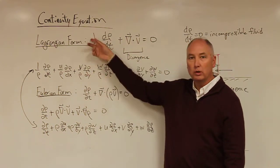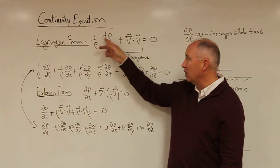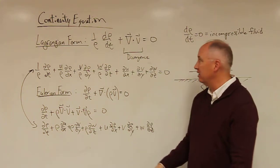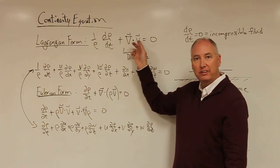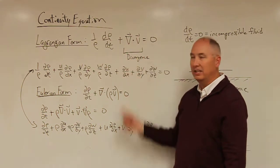And the form of the equation is one over the density times the total derivative of the density with respect to time, plus del dot v. And this is actually the divergence.